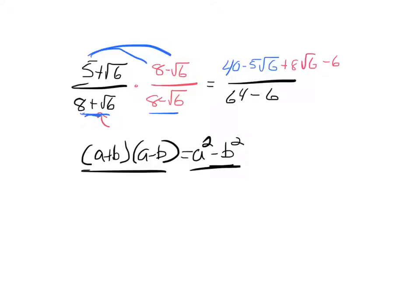And then the square root of 6 times the 8 to get 8 square root of 6. And the square root of 6 times the negative square root of 6 to get negative 6 over here on this side.